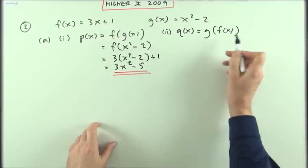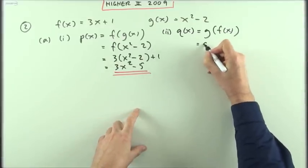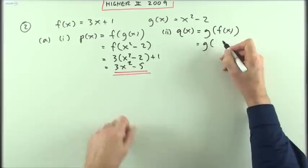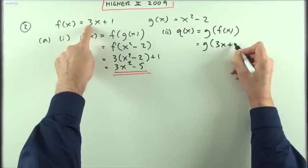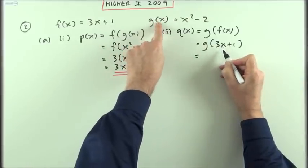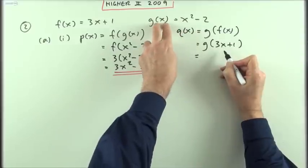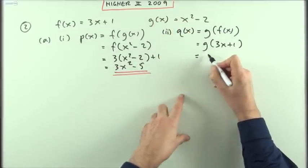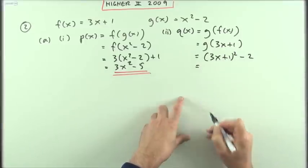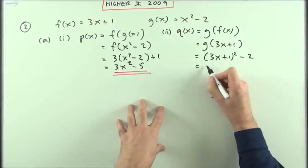What about q(x) the other way round? What's g of f(x)? That'll be g acting on what f(x) produces. Put x into f and it gives you 3x plus 1. Then whatever you put into g, it takes that and squares it. So the content of this bracket will be getting squared, and then two subtracted.